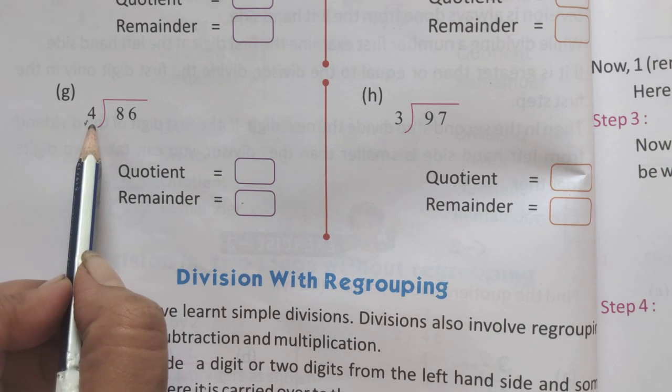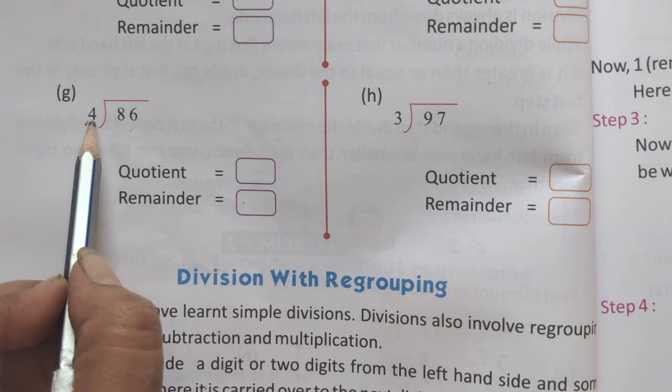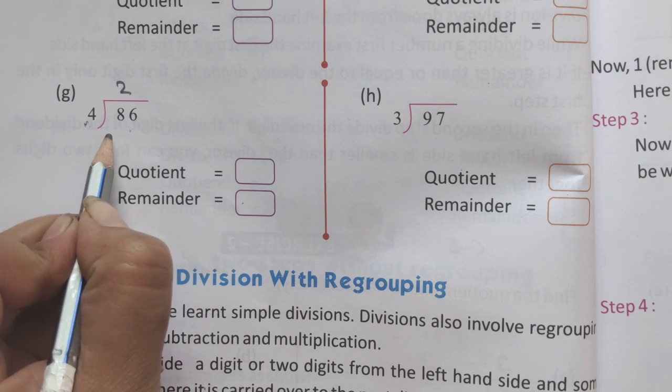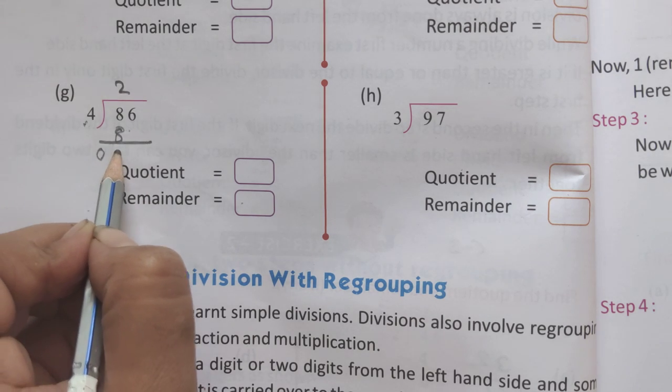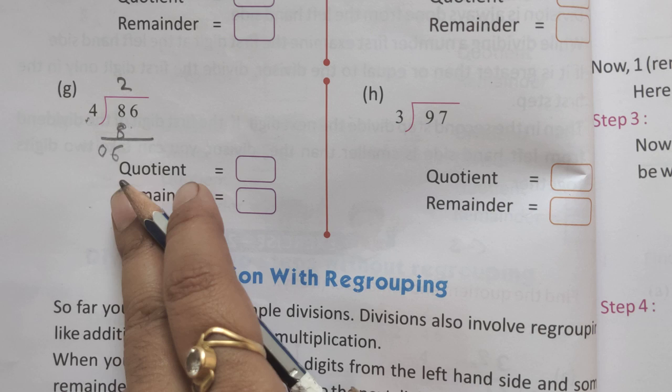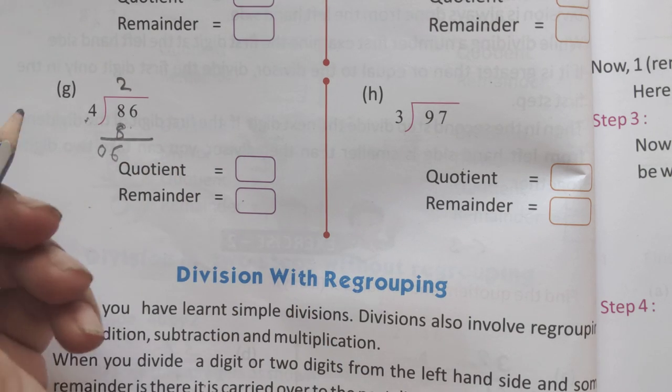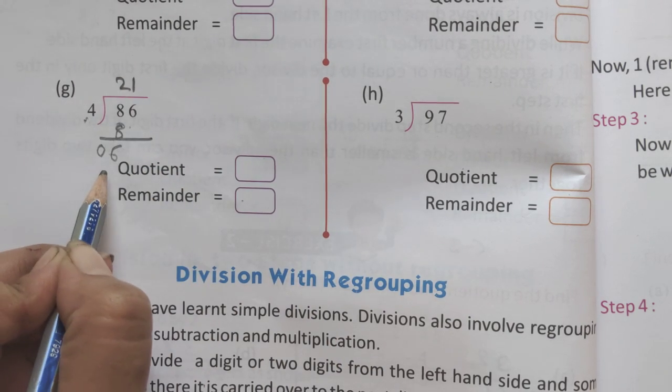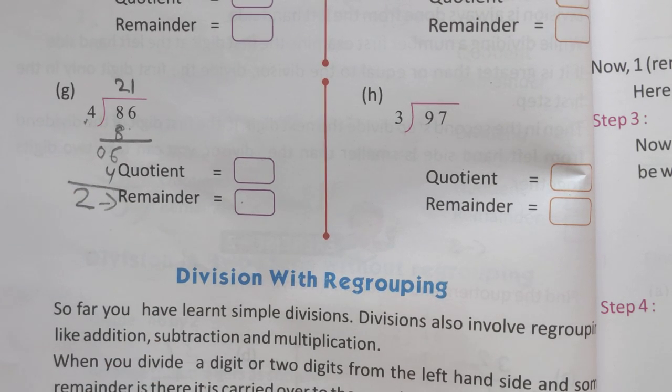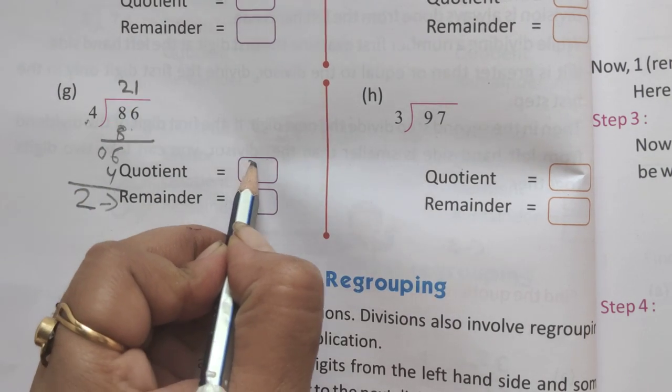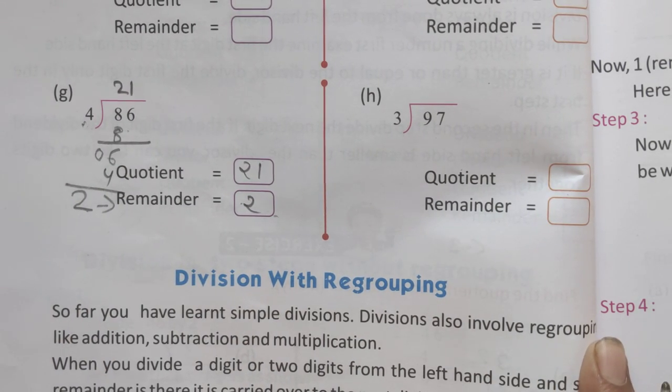4 is the divisor and 86 is the dividend. Using the table of 4: 4 twos are 8. 8 subtract 8 equals 0. Next number is 6. 4 ones are 4, and 4 twos are 8, but 8 is greater than 6, so we use 4 ones which is 4. 6 subtract 4 equals 2, the remainder. The quotient is 21 and the remainder is 2.